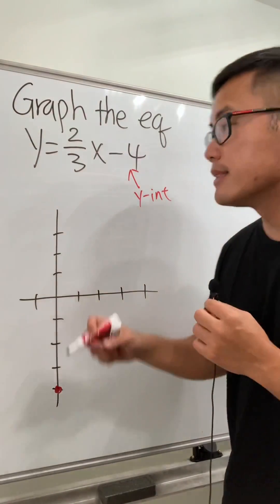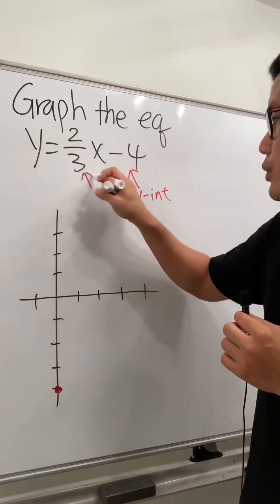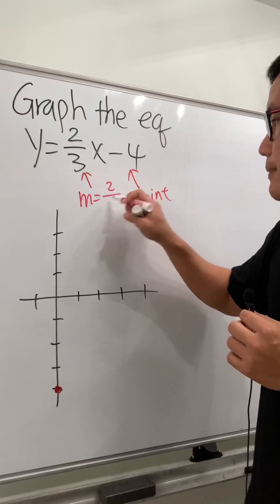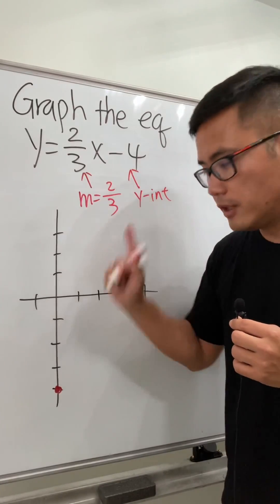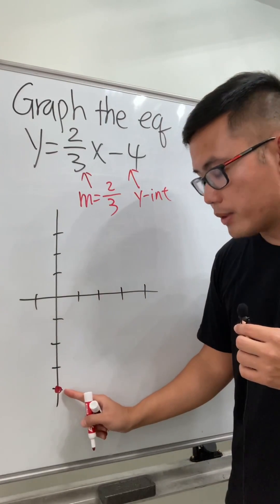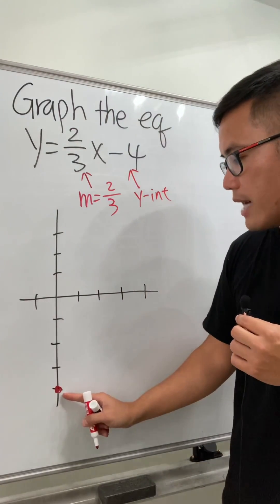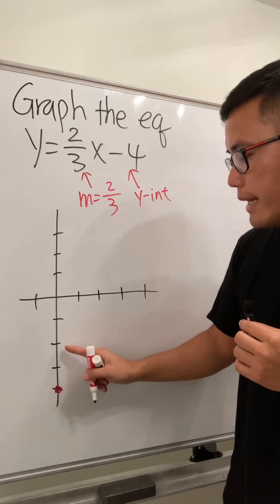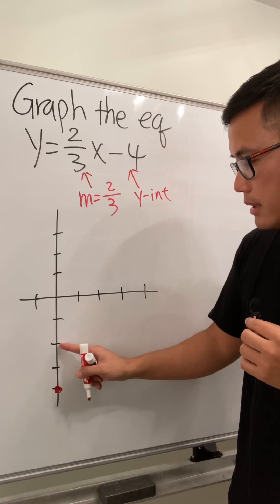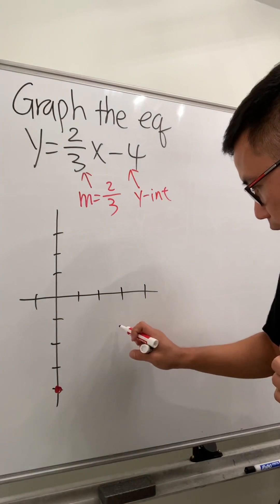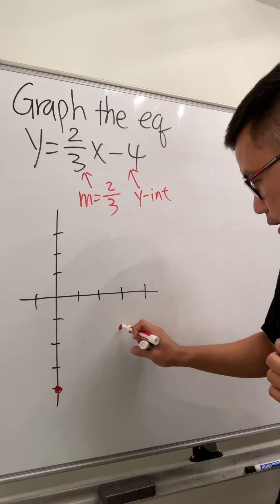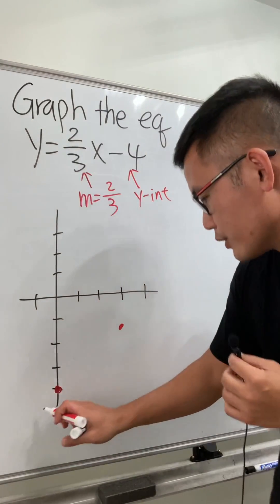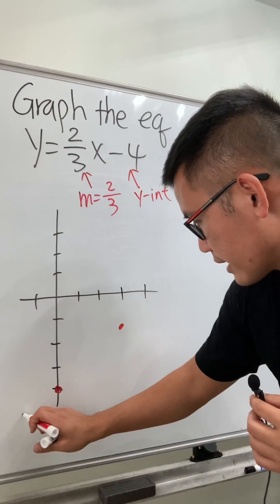And then the slope is this number, which is 2 over 3. This means we are going to go up 2 units from this point, counting 1, 2. And then the 3 tells us to move to the right 3 times — 1, 2, 3. So we have another point here, and then we have the 2 points, so we can just go ahead and connect the dots.